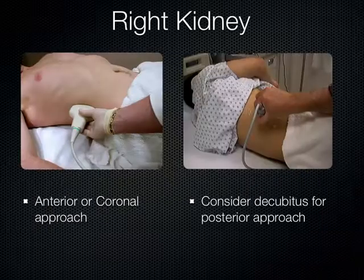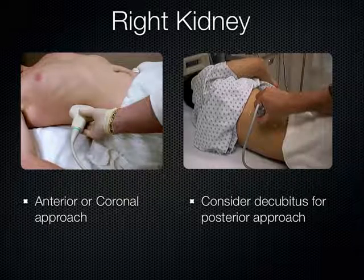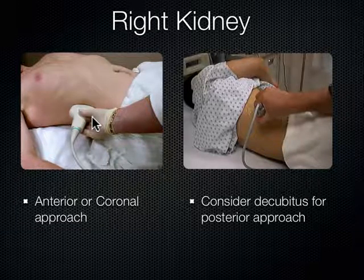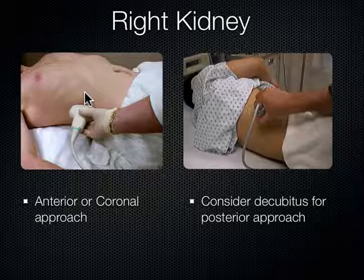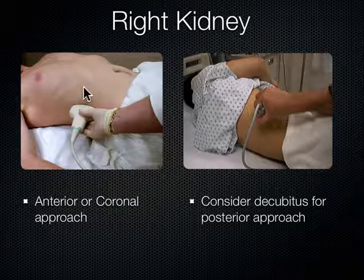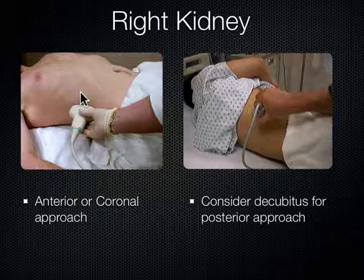There are a couple ways to look at the kidneys. You can come from the side of the body — coronal approach — and often get great views right away. Occasionally you need to drag the probe anteriorly, but since the kidneys are still a posterior structure, you'll also want to fan the probe posteriorly — tilting the cable towards the ceiling, shooting sound more posteriorly. Many times that anterior approach, using the liver or spleen as your window, is actually better than a coronal view. Every patient is different — this is the art of sonography.